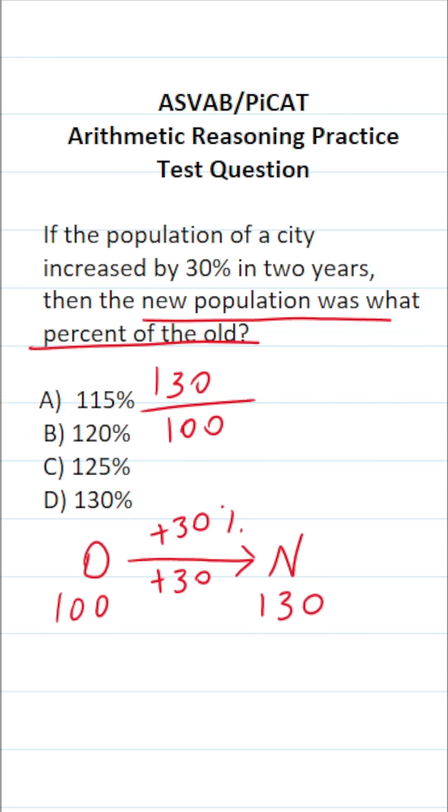Now, whenever you divide something by 100, that number is just the percent. So 130 divided by 100 is 130%. The answer is D, 130%.